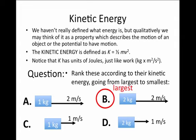The largest kinetic energy is B. It is a large mass, 2 kilograms, moving at a large speed of 2 meters per second. Now the question is, what's the second largest kinetic energy here?